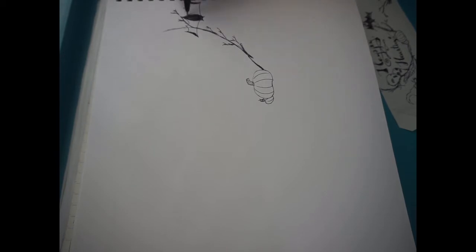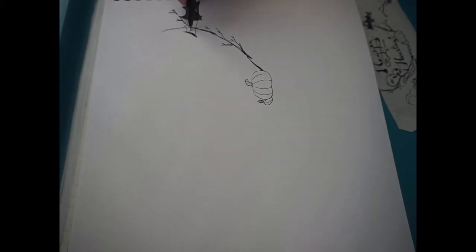You make little branches by making little Y's or little W's depending on how you want it to look.